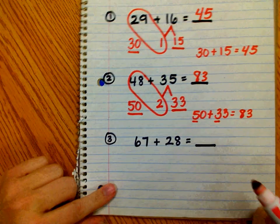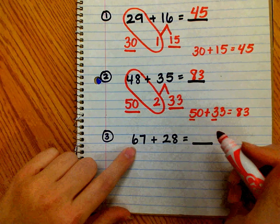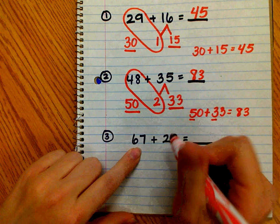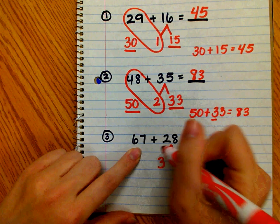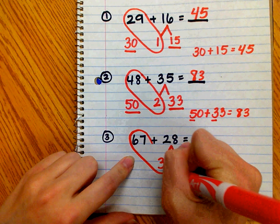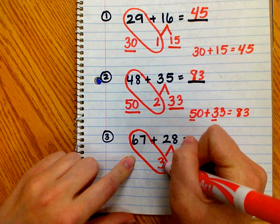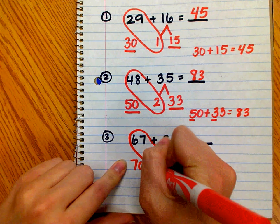Let's look at one last example. 67 needs 3 more to make a multiple of 10, so I'm going to take 3 from 28, because I know 67 plus 3 equals 70.